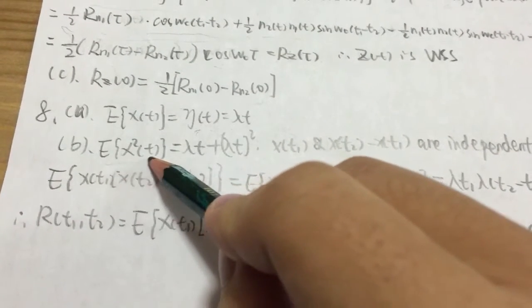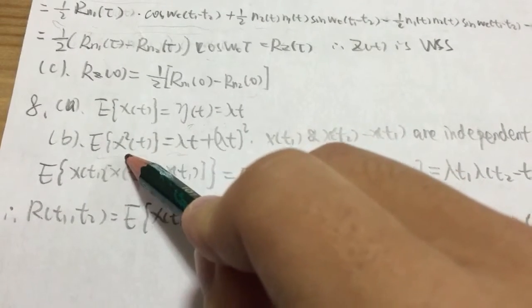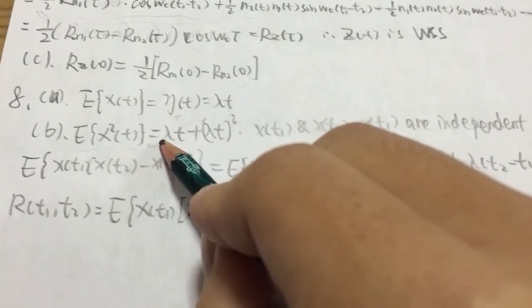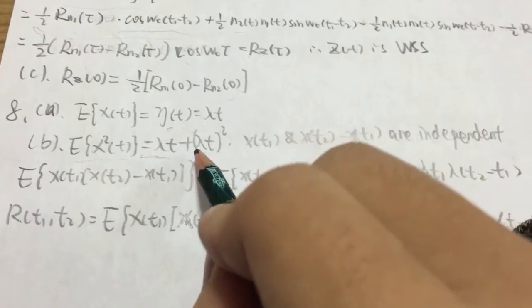the Poisson distribution has this E[X times X] equals lambda t plus lambda t squared.